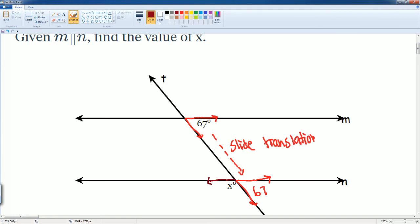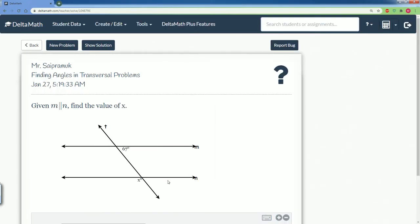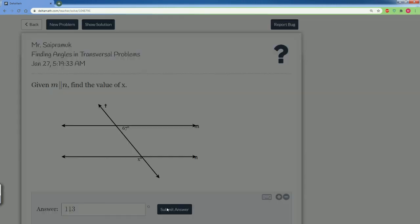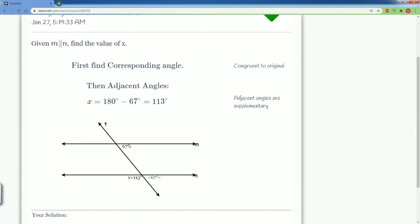Then we see that these two angles here make a line, so we say that angle X plus 67 is going to be equal to 180 degrees because they are linear pairs. Now let's solve for X. So we subtract 67 from both sides, then we get angle X is going to be equal to 180 subtract 67, which is 113 degrees. Let's put in the answer—113—and we should be correct. Good.